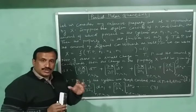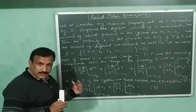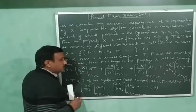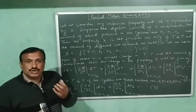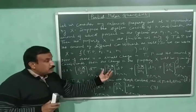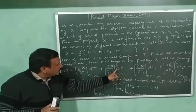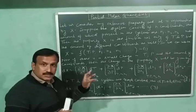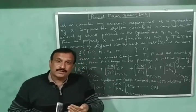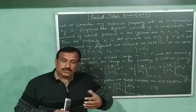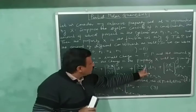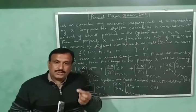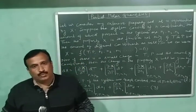The first term in Equation 2 gives us the change in the value of X when the temperature is changed by a small amount dT. The second term gives the change in X when the pressure is changed by a small amount dP. Likewise, the third term gives the change in X when the number of moles of the first component is changed by dn₁, and the following term gives the change in X when the composition of the second component is varied.